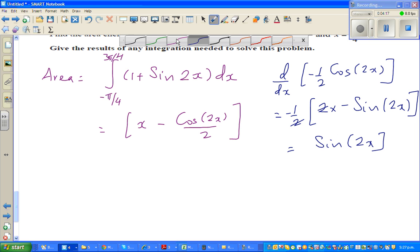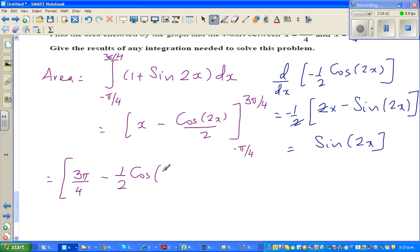So let me bring back my violet color. So this is from minus pi by 4 to 3 pi by 4. And what you do is you substitute the upper bound first, and then take away the lower bound. So this becomes 3 pi by 4 minus half cos 2 times 3 pi by 4. I'll be super careful.